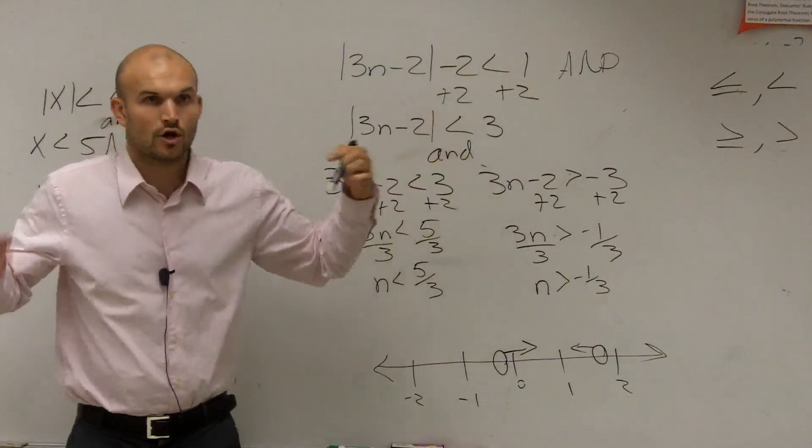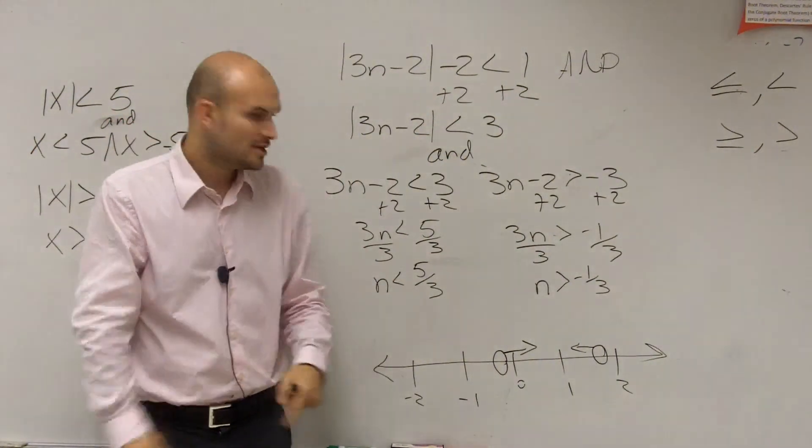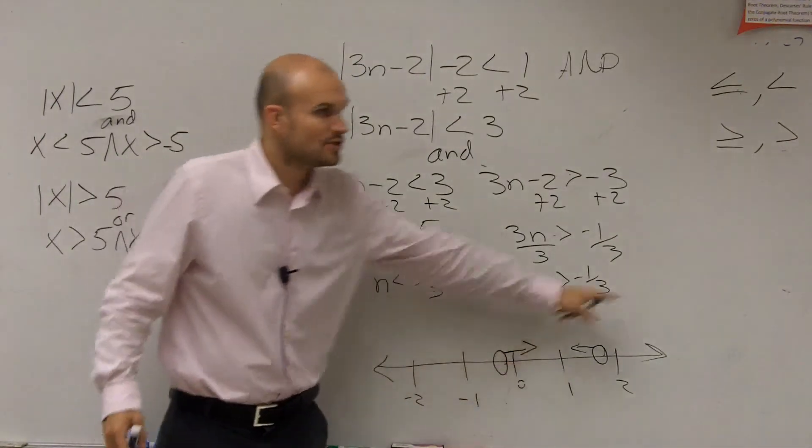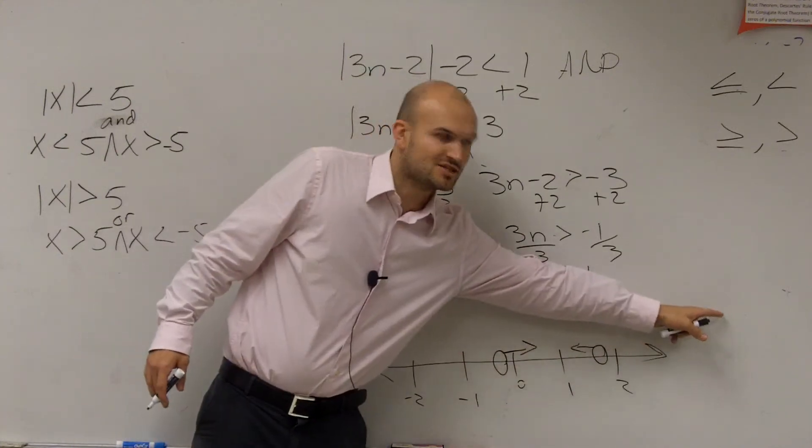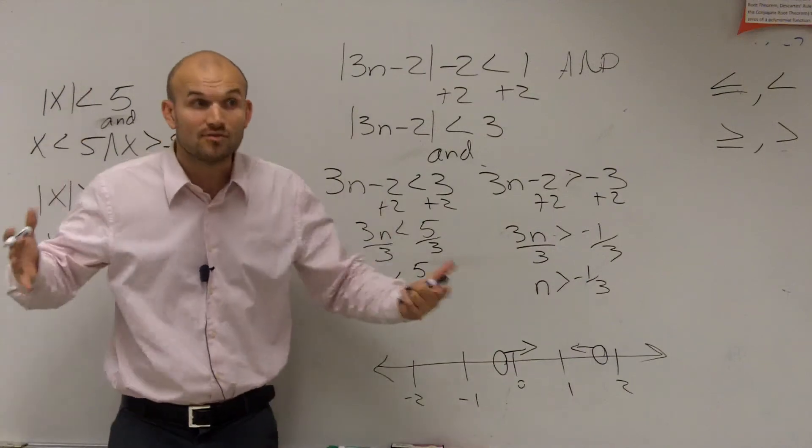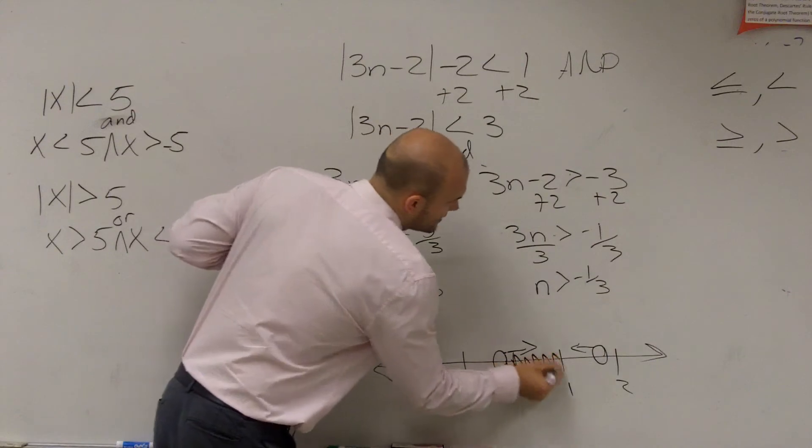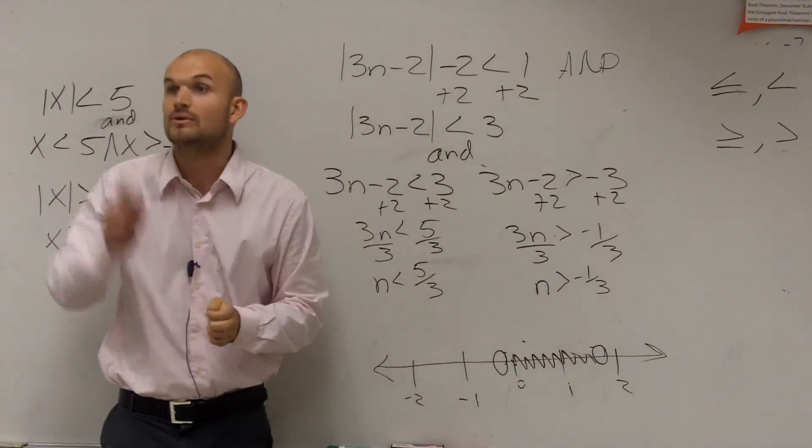Since it's an AND statement, we're only going to shade where they are true for both of them. So where's the only region that makes both of those true? These go on to infinity, right? This line, all these numbers make that true, and all the numbers over there make it true. But where is the only solution that makes both of them true? Just between them. So that's why your answer, the AND, is what makes them both true.